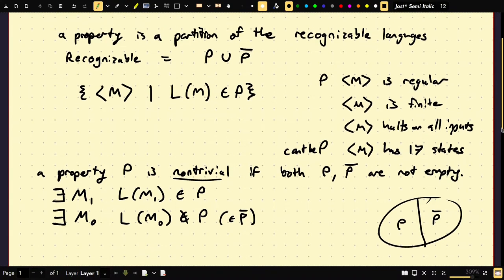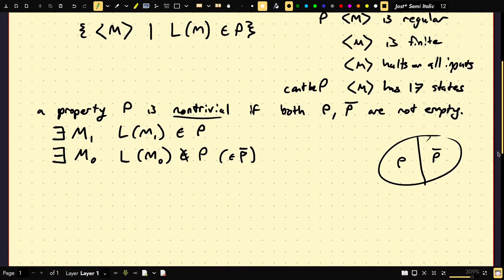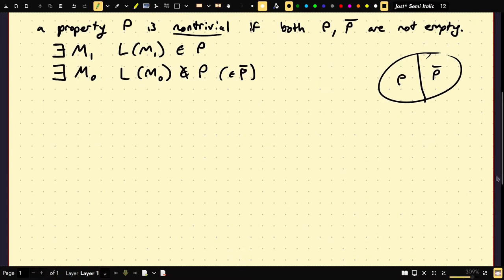So the both sets are not empty. You can think of, these are all the recognizable languages, and then P is a partition of it. So this is P and this is P complement. It's saying that it's not overwhelmingly dominating it. Rice's theorem states that non-trivial properties of Turing machines are undecidable, essentially. So let's go ahead and just give the proof, and then I'll give some applications of the proof.